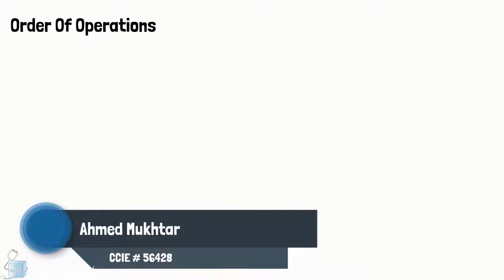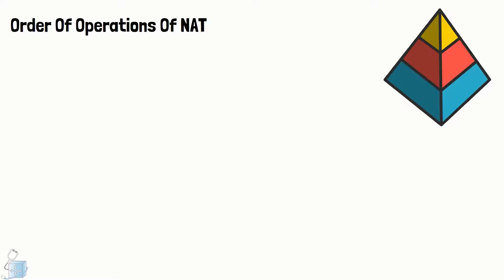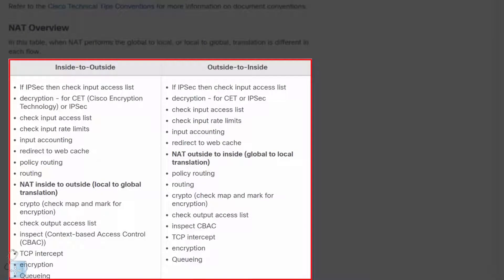When troubleshooting NAT, this concept will 90% of the time save your day. For this series, we will keep it really simple. Heading towards Cisco's documentation on the order of operations for NAT with respect to IOS or IOS XE devices, we will focus on the most important one, and that is routing.